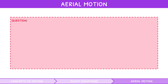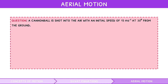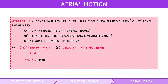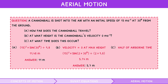Let's look at an example question. A cannonball is shot into the air with an initial speed of 15 metres per second at 30 degrees from the ground. A: how far does the cannonball travel? B: at what height is the cannonball's velocity zero? C: at what time does this occur? For A, range equals u squared times sine of 2 theta divided by g, giving a range of 11 metres. For B, the cannonball's velocity is zero at maximum height, so maximum height equals u squared times sine squared of 2 theta divided by 2g, giving a maximum height of 5.7 metres. For C, the maximum height is reached at half of the airborne time, so time equals a half times 2u times sine theta divided by g, giving a time of 0.77 seconds.